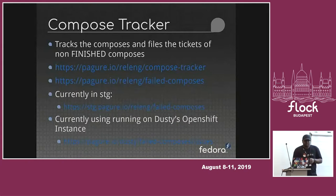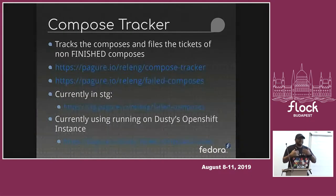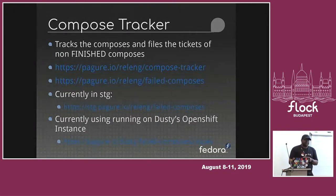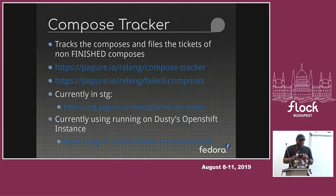The source code is currently available in Pagure at pagure.io/releng/compose-tracker. Where we file tickets is the second URL, under releng failed composers — that's where we file the tickets. Currently it is deployed in staging and it is tracking the real composes, but we are not using it. It is also deployed on Dusty's OpenShift instance where we got the idea and started moving into releng.